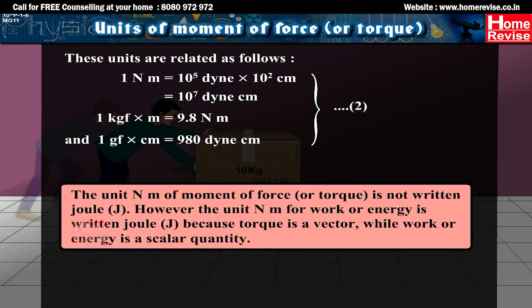The unit Newton meter of moment of force or torque is not written as Joule (J). However, the unit Newton meter for work or energy is written as Joule (J), because torque is a vector quantity while work or energy is a scalar quantity.